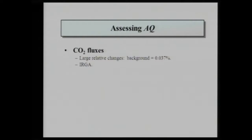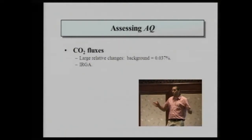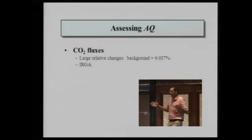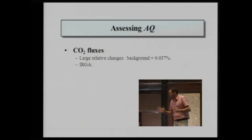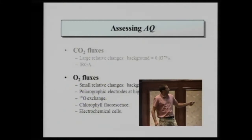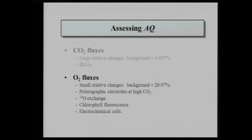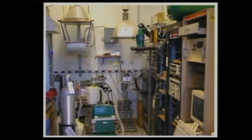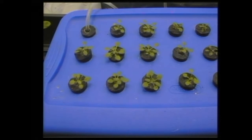Assessing AQ: we measure CO2 fluxes using an infrared gas analyzer. The background is only 380 parts per million, so measuring one to five parts per million on that background is relatively easy. However, measuring O2 fluxes is much harder, because the background of O2 is 210,000 parts per million in our atmosphere. Today, with advances in technology, it's possible to measure both simultaneously with a very sophisticated instrument.